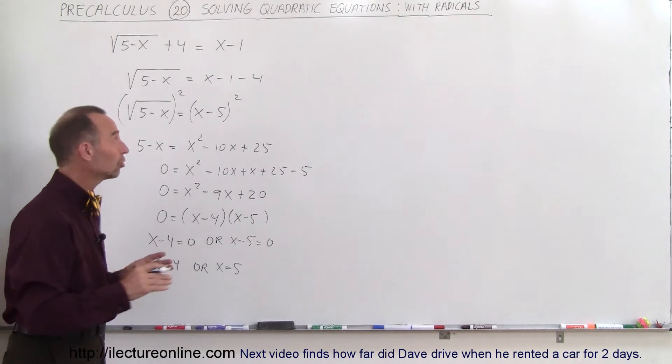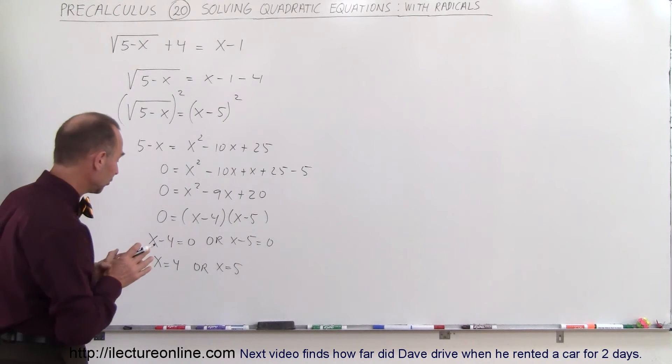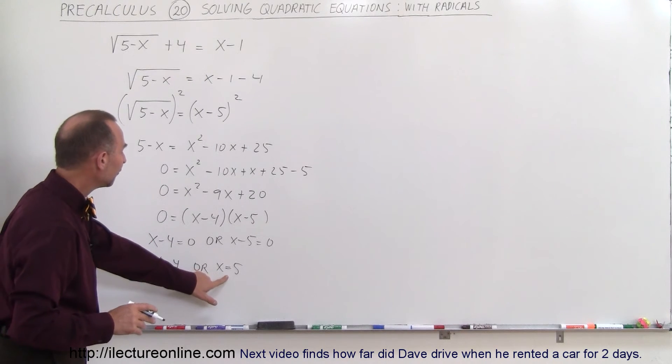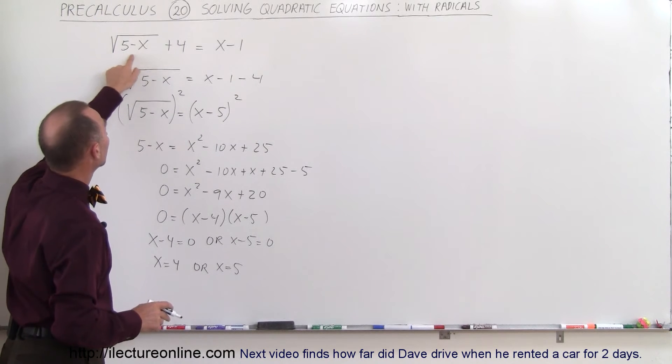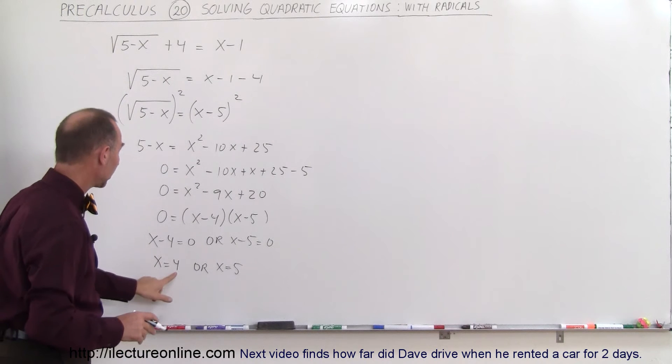Before we say that that is our solution, let's go back to our original equation and make sure that we have no violation of any rules. If you plug in the 5, we get 5 minus 5, that is 0. So 4 equals 5 minus 1. That works. That is correct. And when we plug in the 4,